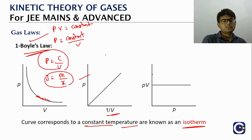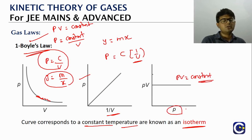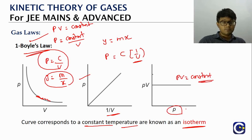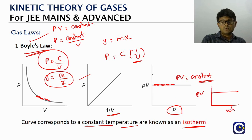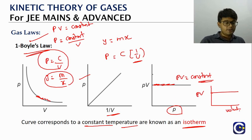If we plot P×V against pressure or against volume, P×V remains constant under Boyle's law conditions — so both graphs give a horizontal straight line. These are all called isotherms because temperature is maintained constant. This is the graphical representation of Boyle's law behavior.